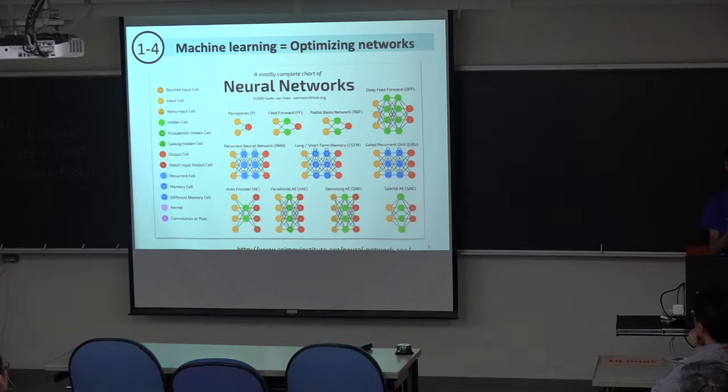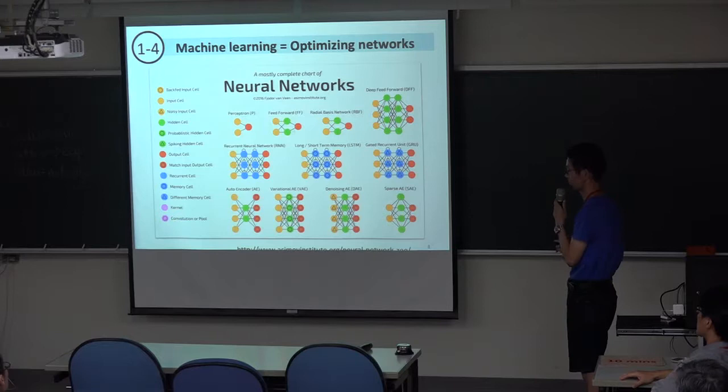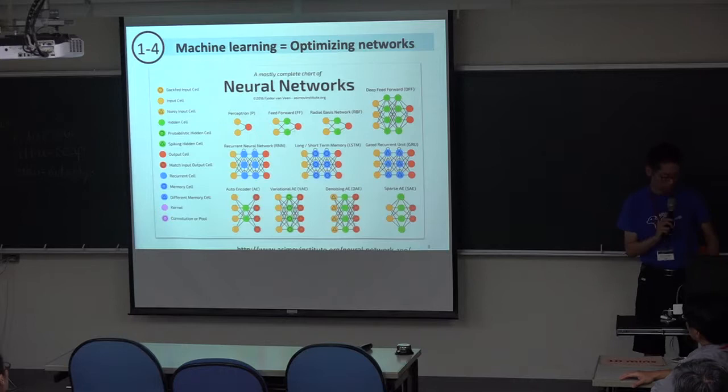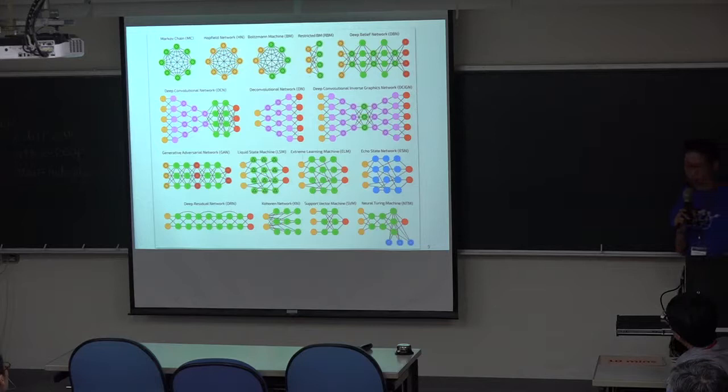Let me give a brief review of machine learning — maybe three or four slides — for those not familiar with the concept. What is machine learning? The easiest way to explain it is: it's just optimizing networks. If you Google neural networks, you find many kinds of neural networks that people have invented. This is just part of the whole schematic landscape of neural networks, and they were invented to serve various purposes.